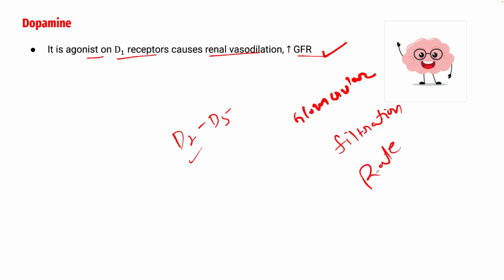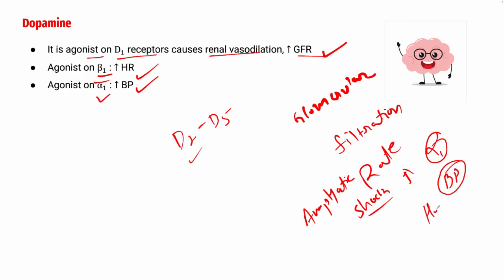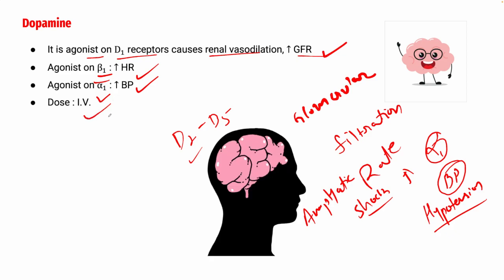Dopamine is also an agonist on beta-1 receptors, so it increases the heart rate, and it is an agonist on alpha-1 receptors as well, hence it increases blood pressure. This we have seen already with adrenaline uses in anaphylactic shock, where heart rate was increased by beta-1 and blood pressure by alpha-1. Dopamine is administered in the form of intravenous only.